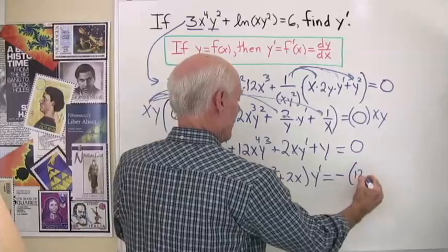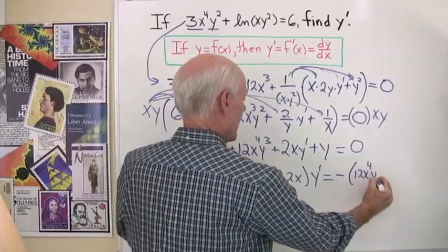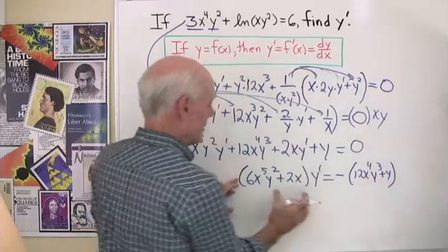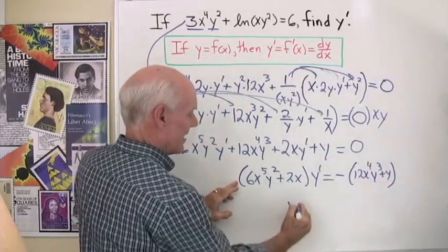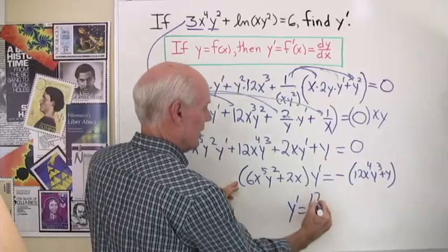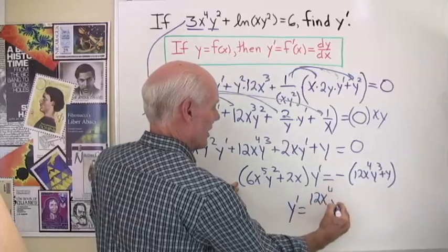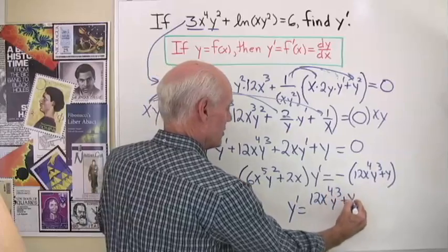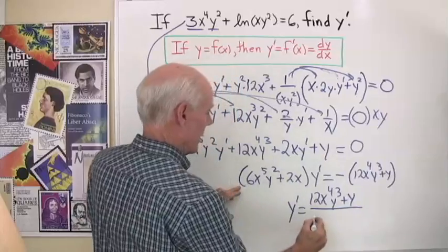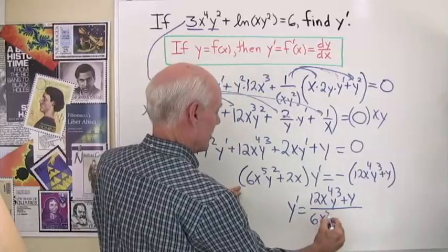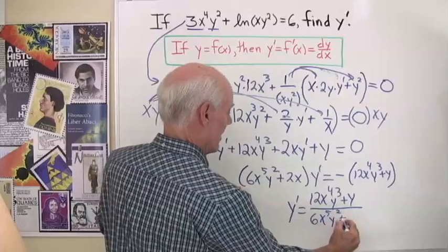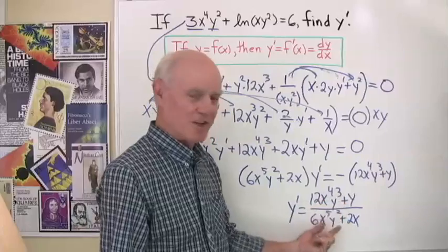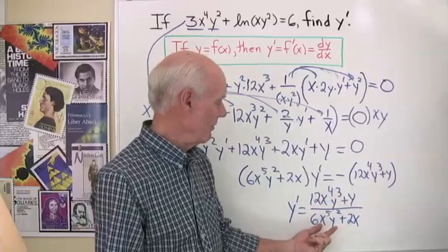That gives negative 12x to the fourth y cubed plus y. Dividing both sides gives y prime equals negative (12x to the fourth y cubed plus y) all divided by 6x to the fifth y squared plus 2x. I could simplify the numerator and denominator a bit more, but this is good enough.